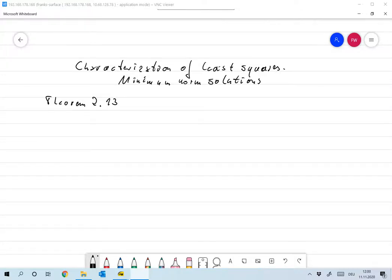Let me continue with the characterization for least squares and minimum norm solutions. We have Theorem 2.13, and it says the following is equivalent.